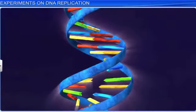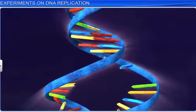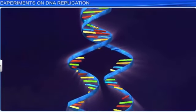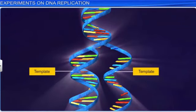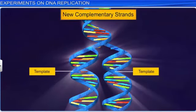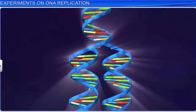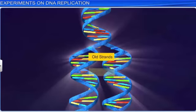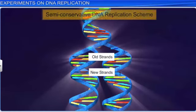According to their proposed scheme, the two strands separated and acted as a template for the synthesis of two new complementary strands. After the replication process was completed, each DNA molecule would end up with one parental strand and one newly synthesized strand. That is why this DNA replication scheme was referred to as semi-conservative.